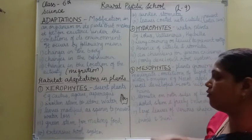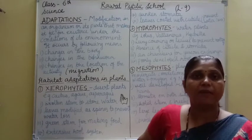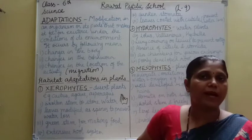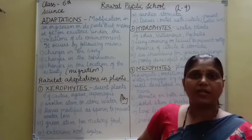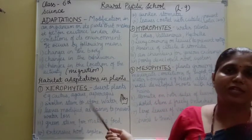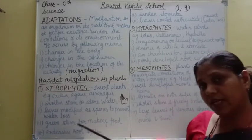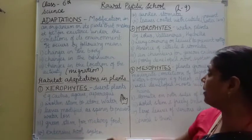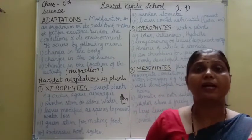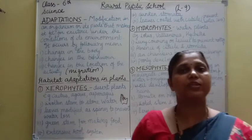Third, green stem for making food. The stem of xerophytes is green, which means chlorophyll is present. So they can make their own food through photosynthesis. Green plants can prepare their own food in the presence of chlorophyll. Next, extensive root system — desert plants have very extensive and very long roots, because in deserts the water level is very low, so roots go deep into the soil to absorb water.